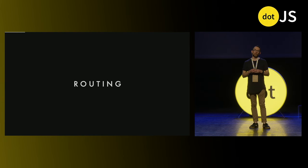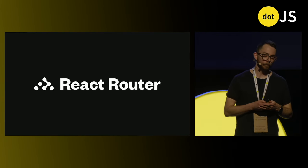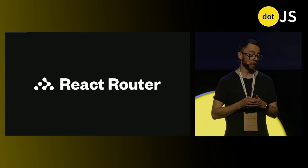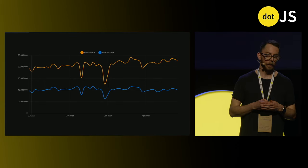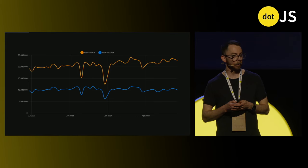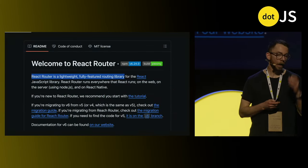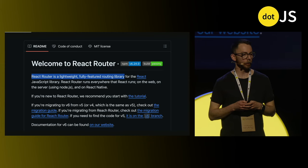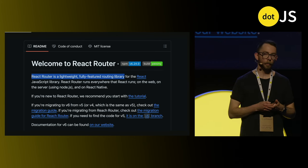You see the same distinction happening in the world of routing, which is, of course, where Remix sits. We have React Router, which has been a staple of the React community pretty much since the beginning. That's reflected in this download chart where you can see about half of all React installs are coupled with React Router — pretty impressive numbers. If you look at the readme for React Router, you can see that it describes itself as a lightweight, fully-featured routing library.